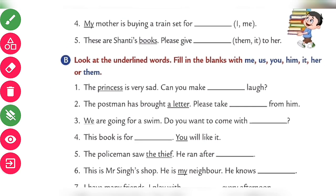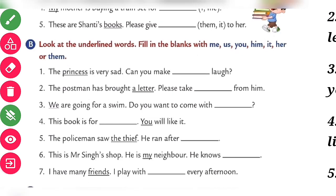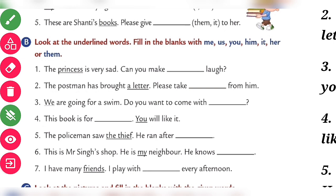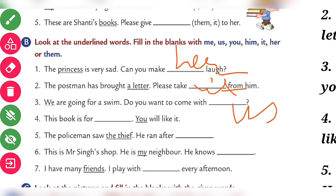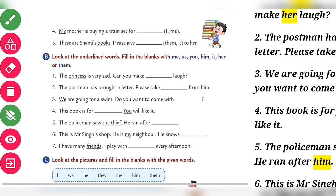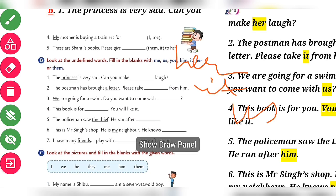Now the exercise: underline words and fill in the blanks with me, you, him, it, her, or them. First: 'The princess is very sad, can you make her happy?' Second: 'The postman has brought a letter, please take it from him.' Third: 'We are going for a swim, do you want to come with us?' Fourth: 'This book is for you.'